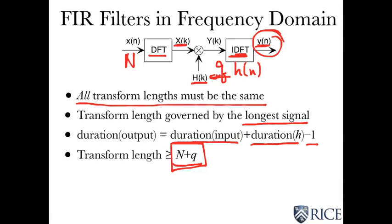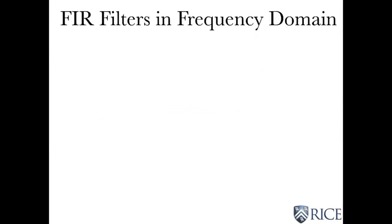So that means that this has duration n, this has duration q, the little h of n. That means we're going to have to pad those and take a transform at least n plus q long, which is going to be the duration of y of n. And of course, n plus q may not wind up being a power of 2 for using the FFT. So we're going to pad that even with 0 so we can get to the next power of 2.